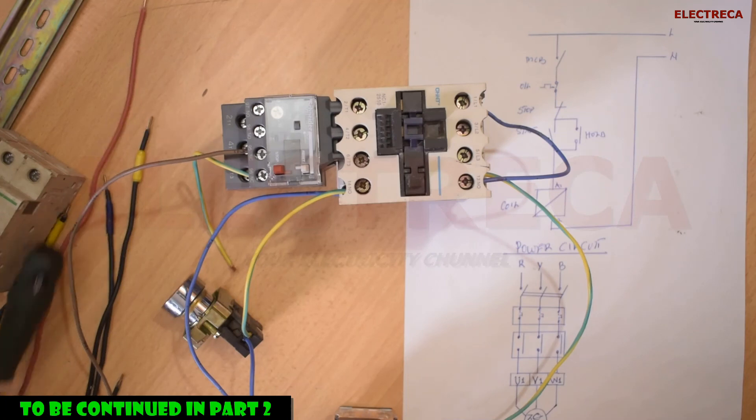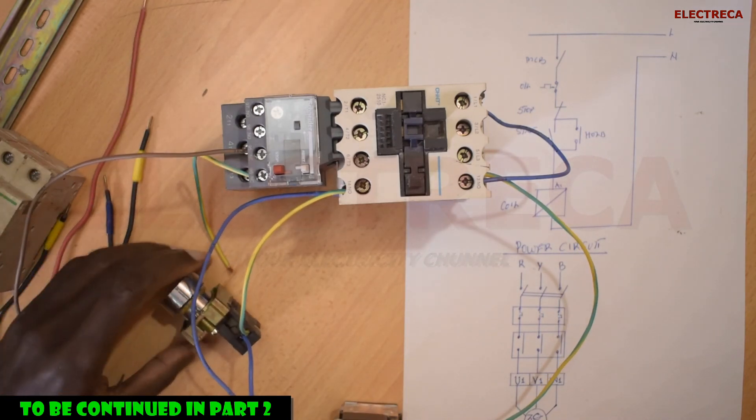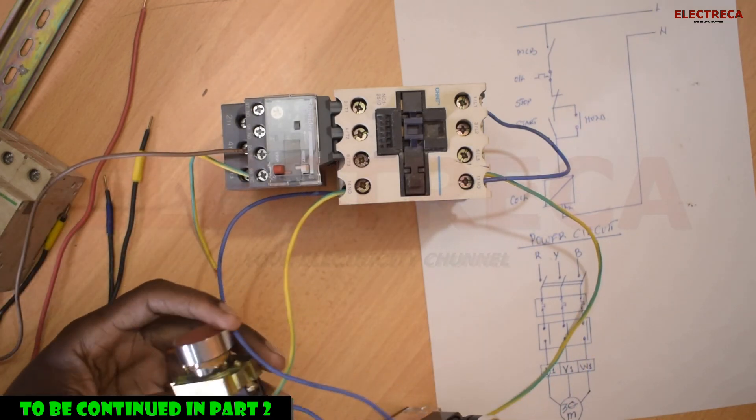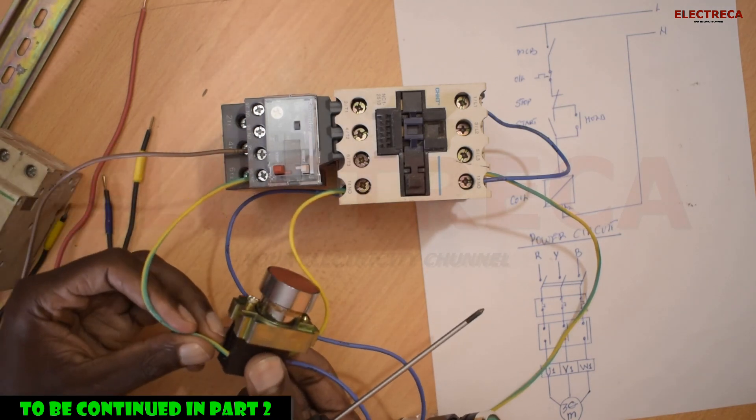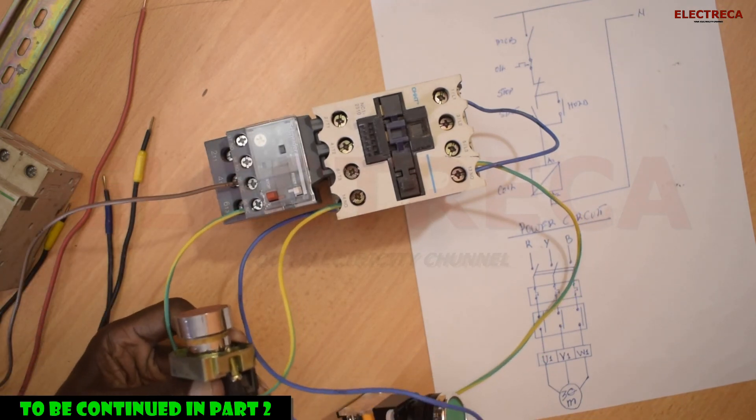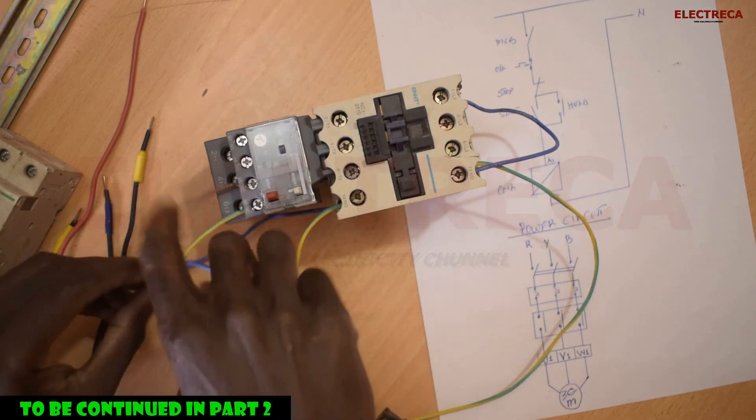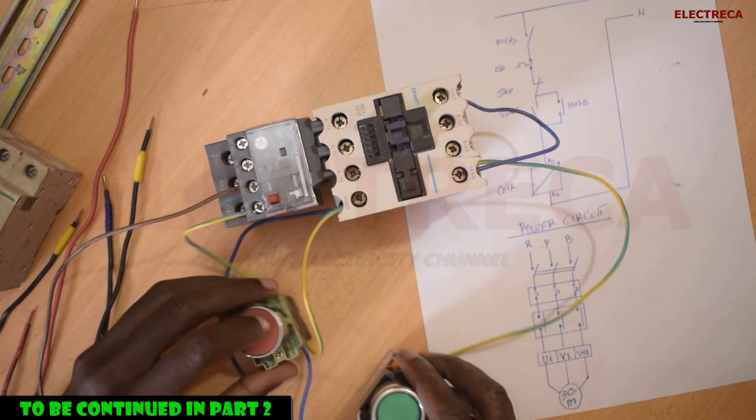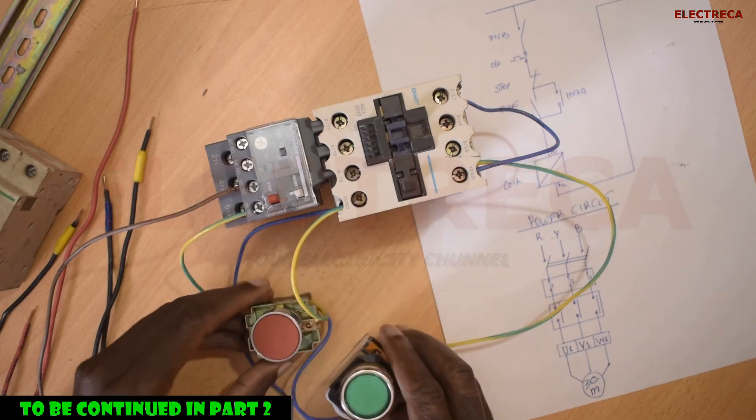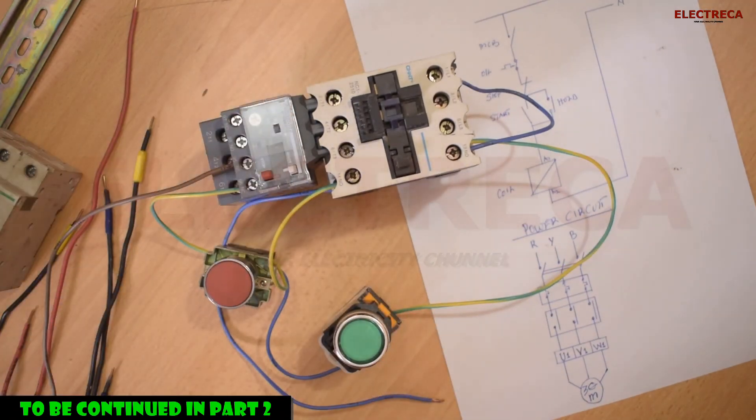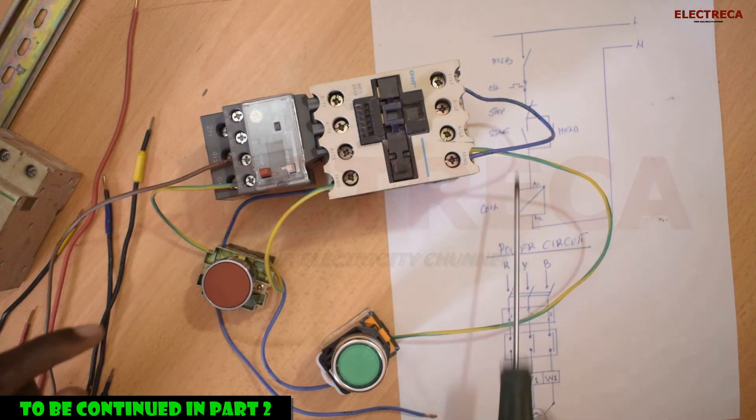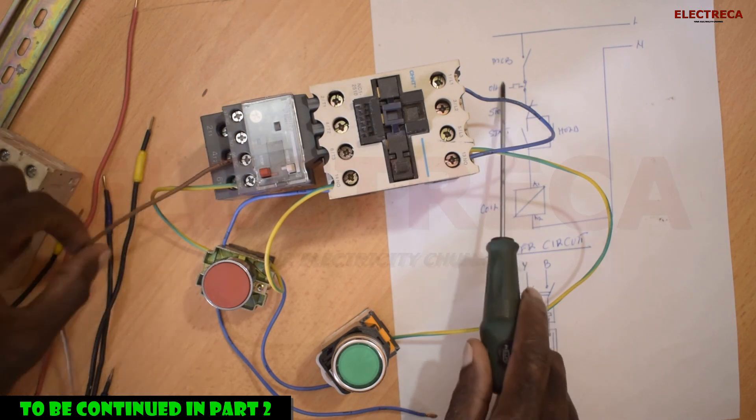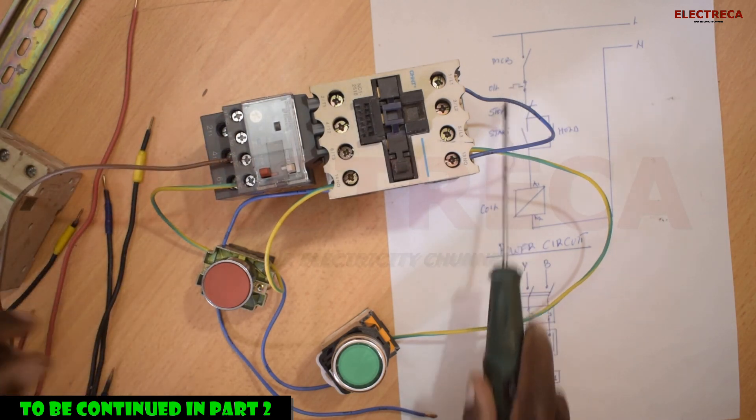So you've already followed along what we've done from where we started here. So you have already followed along our circuit very well. Now we have our start and our stop, and exactly you've seen how we wired here the overload relay, we've already passed through the overload right here, the breaker.